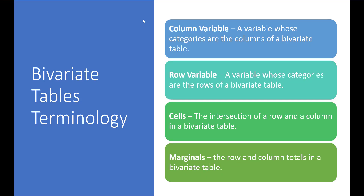In a bivariate table, we have two variables. The column variable is the variable whose categories are the columns of a bivariate table, while the row variable is the variable whose categories are the rows. Cells are the intersection of a row and a column, and can be frequency, proportion, or percentage. Finally, the marginals are the row and column totals in a bivariate table. Let's take a look at what this looks like in an actual table.